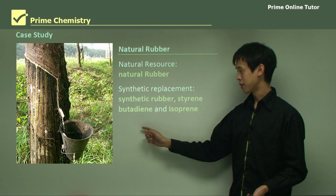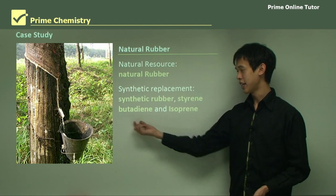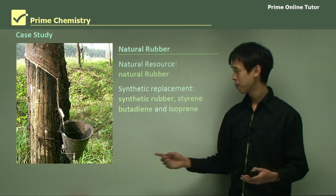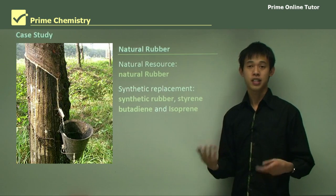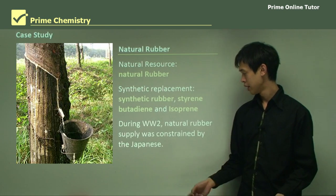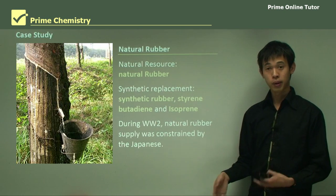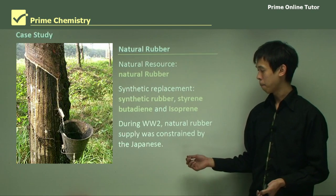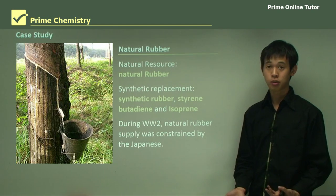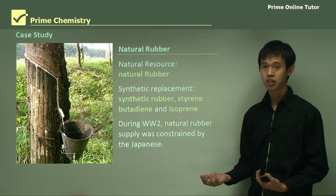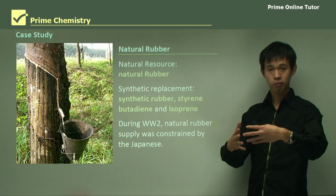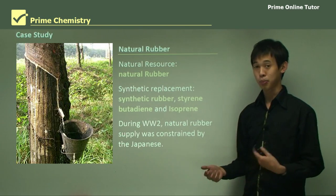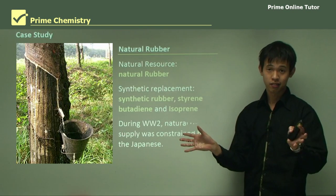The synthetic replacements were styrene butadiene, an older chemical produced in the World War II era, and isoprene, a slightly newer chemical. Rubber used to come from Malaysia and Southeast Asia — Indonesia and that area — because they had a rich supply of rubber tree plants. During World War II, the Japanese controlled that entire area, so natural rubber supply for the Allies was constrained.